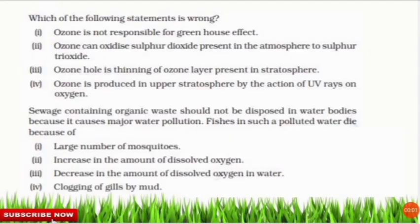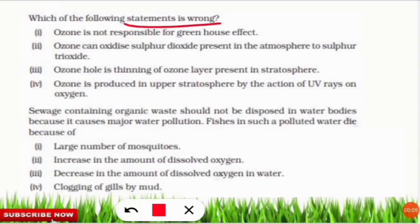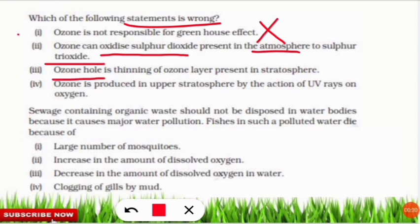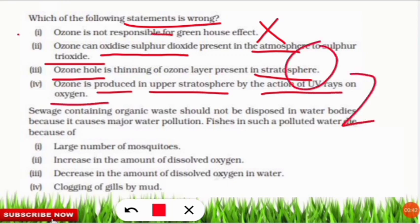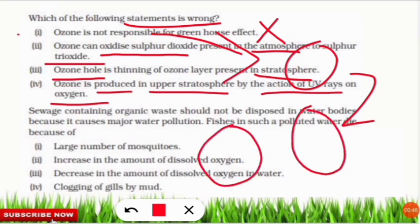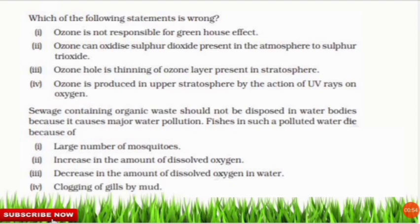The next question asks which statement about ozone is wrong. The correct statements are: ozone can oxidize SO₂ in the atmosphere to SO₃; the ozone hole is the thinning of the ozone layer in the stratosphere; and ozone is produced in the upper stratosphere by the action of UV rays on oxygen — when O₂ is split by UV into singlet oxygen atoms, which then combine with another O₂ molecule to form O₃.